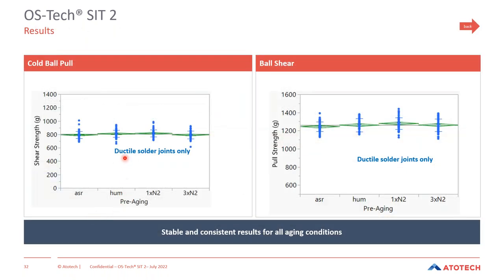The results show that ductile solder joints were observed for both cold ball pull and ball shear testing. For humid aging and reflow aging, the same performance is observed — there is no tendency for any aging condition to lead to a loss of solder joint reliability of the final finish.